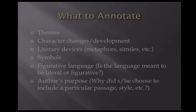So what do you annotate when you write? The first thing to do is go through what speaks to you as you're reading the page. Some common areas that people annotate are themes, character changes or development, literary devices such as metaphors or similes, any symbols that might represent something else, and figurative language. The underlying question is: is the language meant to be literal or figurative? I also like to annotate author's purpose — why did she or he choose to include a particular passage, style, etc.? This can help us as readers understand why the writer has written what they've written and what we as readers are supposed to take from it.